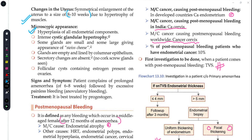Looking at the microscopic appearance, hyperplasia of the endometrium is seen — specifically cystic glandular hypertrophy. The endometrial gland cells show hypertrophy. This cystic glandular hypertrophy associated with metropathia hemorrhagica is important to remember. The glands show a classic Swiss cheese appearance; the glands are empty and lined by columnar epithelium. Secretory changes are absent here.